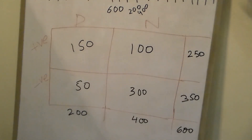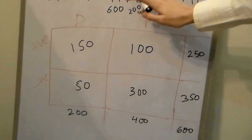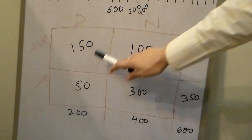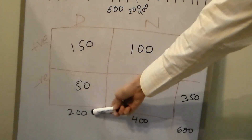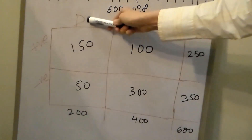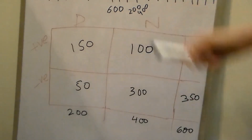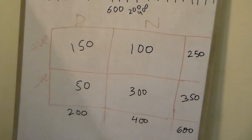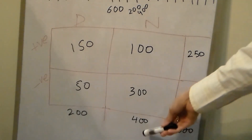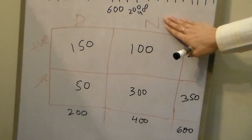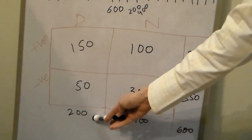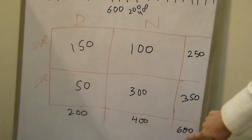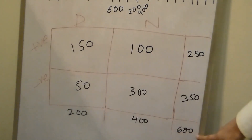From the population we discussed, there were 200 people who did have the disease, so we write 200 for the diseased column total. There were 400 people who did not have the disease, so we write 400 for the non-diseased column. 400 plus 200 is 600, which is the total number of our population.